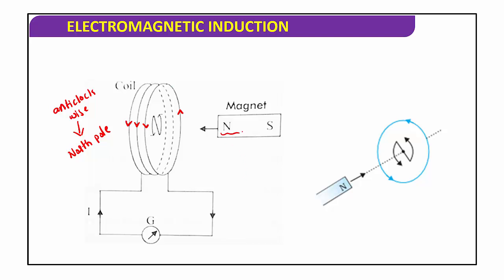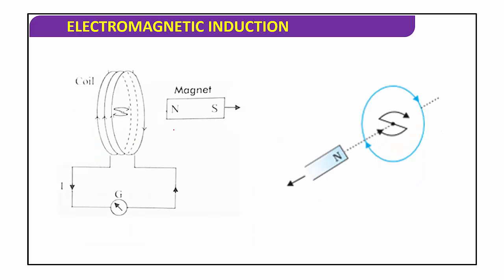Now observe carefully: the north pole of the magnet and the north pole of the coil — both are the same pole. When both are the same poles, there is always a force of repulsion instead of attraction. So when this magnet is moving towards the coil, there is always a force of repulsion.